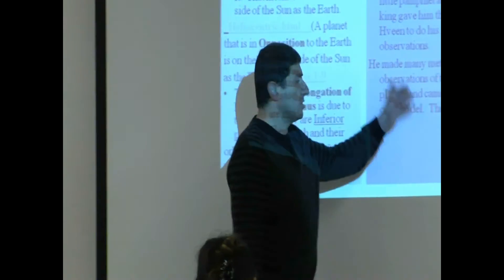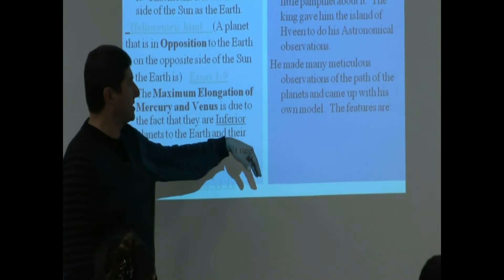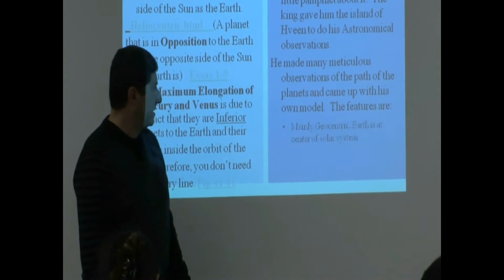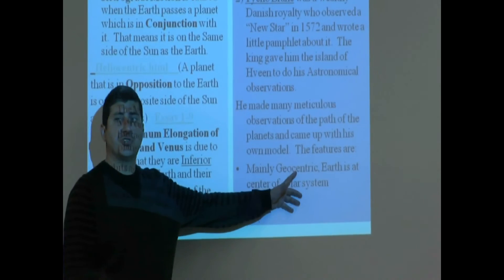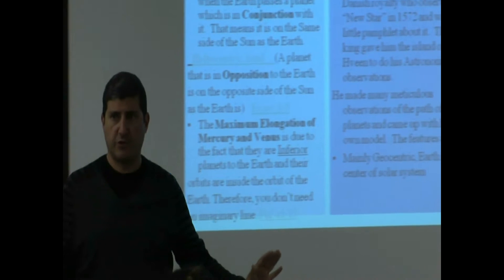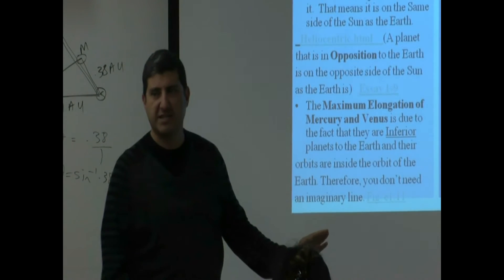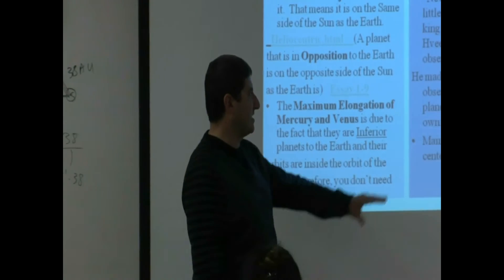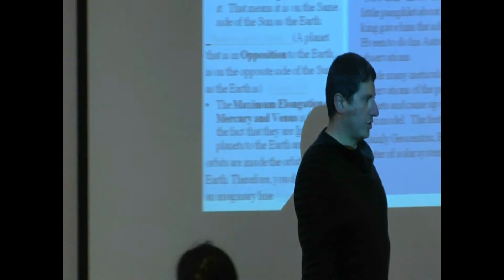So Brahe makes all these meticulous measurements on planets, and he comes up with his own model. Interestingly, his model is more geocentric than heliocentric. So that's kind of unfortunate for him because he goes down in history as important for making all these measurements, but his model is not correct.